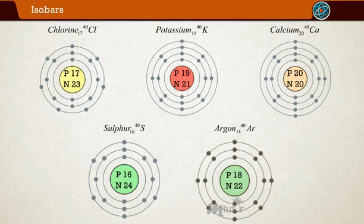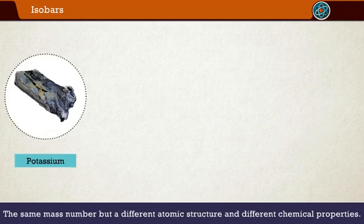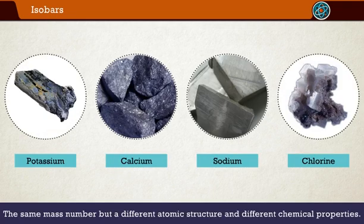Isobars always have different atomic structures because of the difference in atomic numbers. The number of neutrons makes up the difference in the number of nucleons. Therefore, they are always different chemical elements having the same atomic masses. Thus, isobars have different chemical properties.